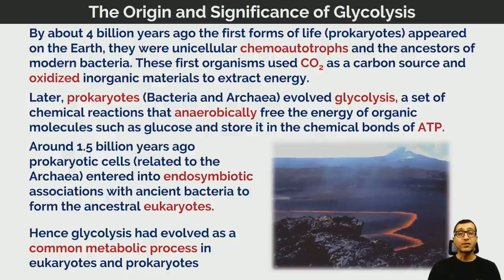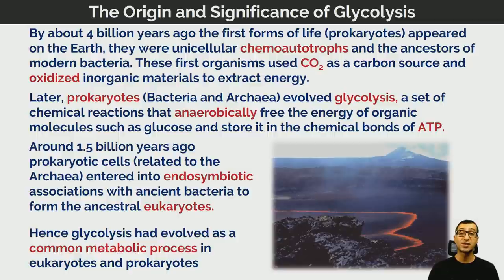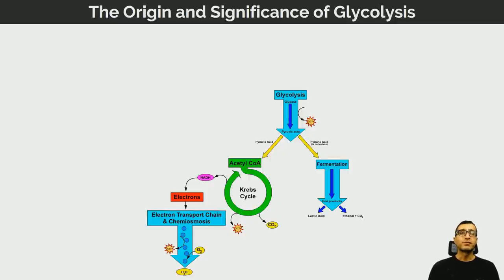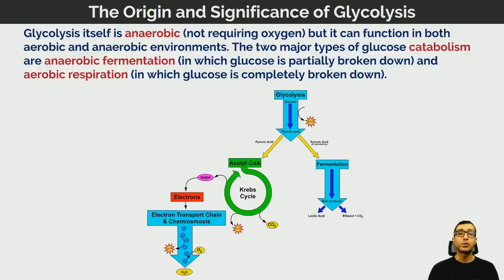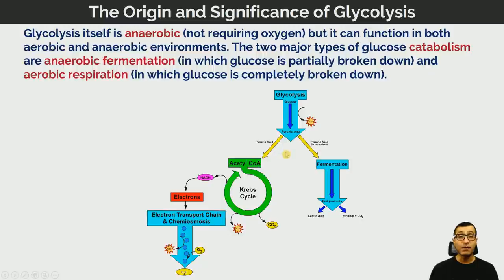We can think of glycolysis as having evolved as a common metabolic process in both eukaryotes and prokaryotes. Prokaryotes, which do not have internal membrane-bound organelles, have glycolysis taking place in their cytoplasm. Glycolysis itself is anaerobic — it does not require oxygen — but it can function in both aerobic and anaerobic environments. The two major types of glucose catabolism are anaerobic fermentation, in which glucose is partially broken down, and aerobic respiration, in which glucose is completely broken down.